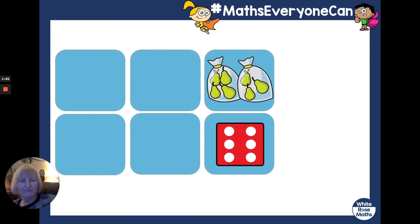Let's have a little look. So, let's just compare these two cards. Let's look at this one here with a dice on. How many spots are on the dice? Let's count. One, two, three, four, five, six.